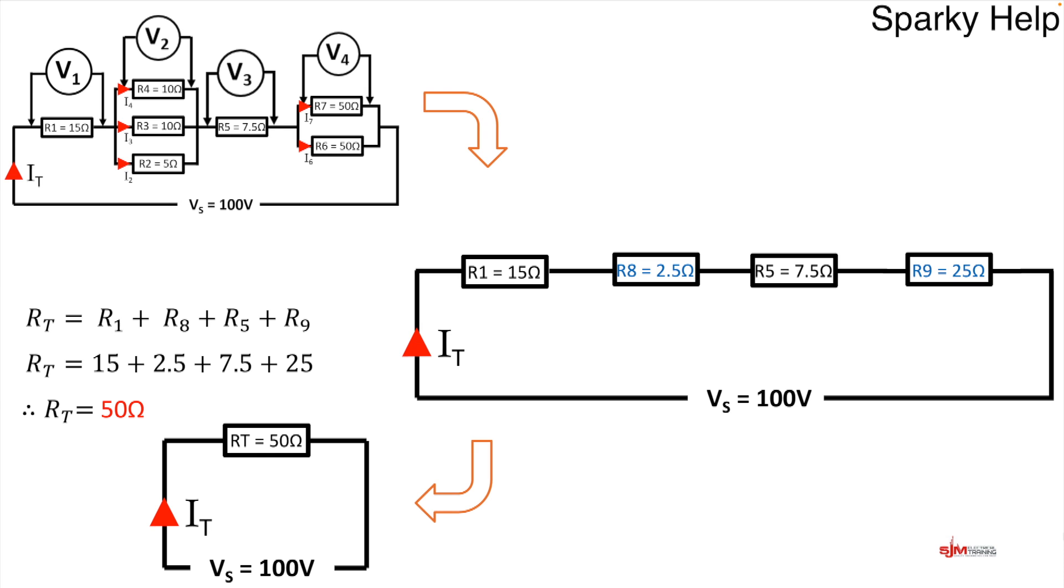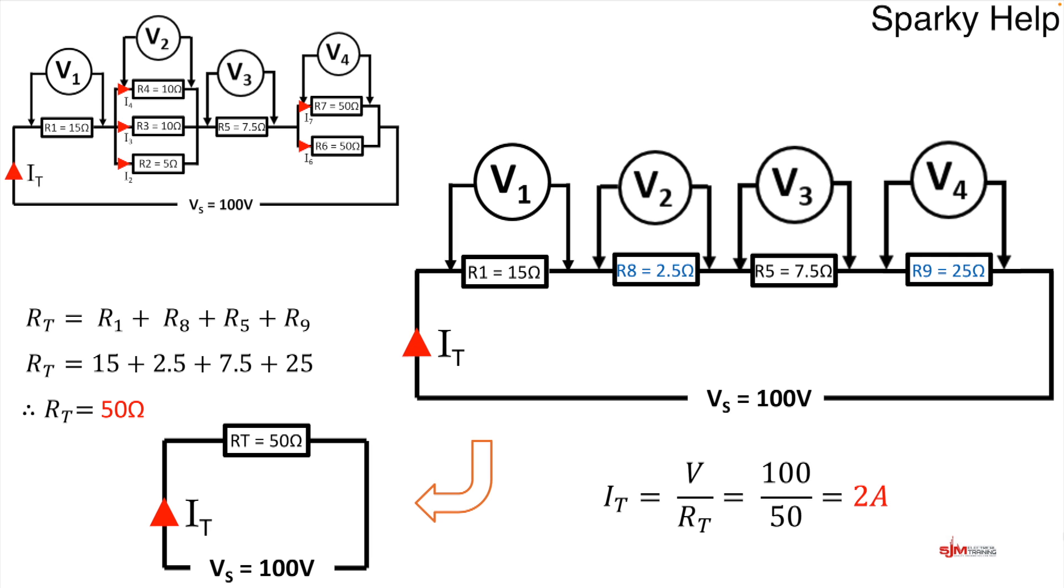And therefore we could work out the current total. Therefore it's a simple Ohm's law calculation, V divided by RT. So 100 divided by 50, not too difficult, 2 amps. Well that takes us back to the voltages. The voltages in the original question were as shown and therefore they're going to apply in these locations as well. Because we're now going to look at the series circuit that we've created and just work out each voltage.